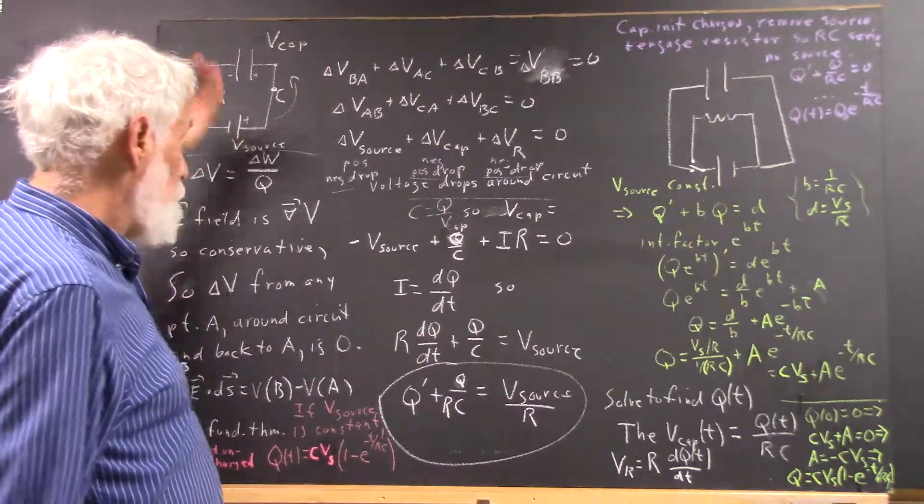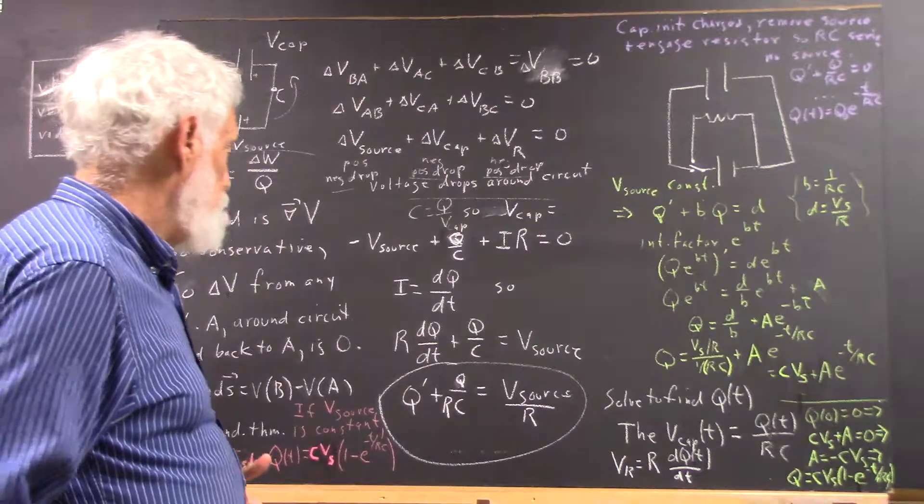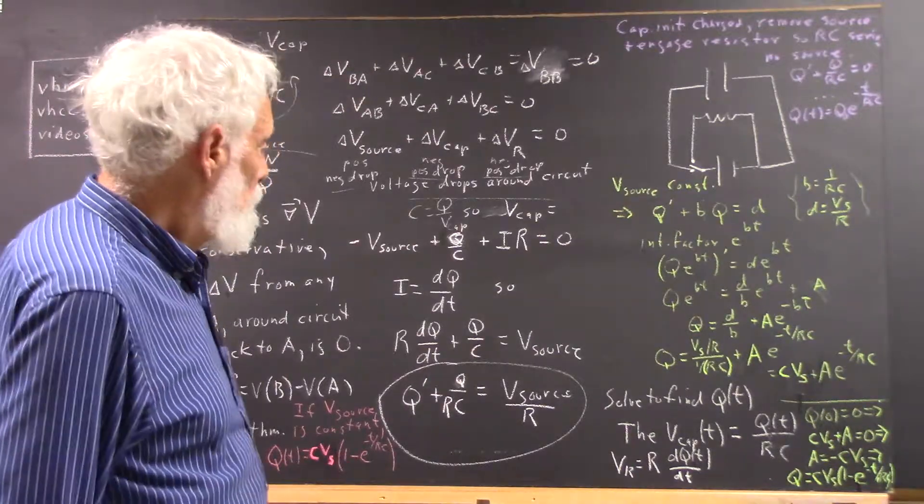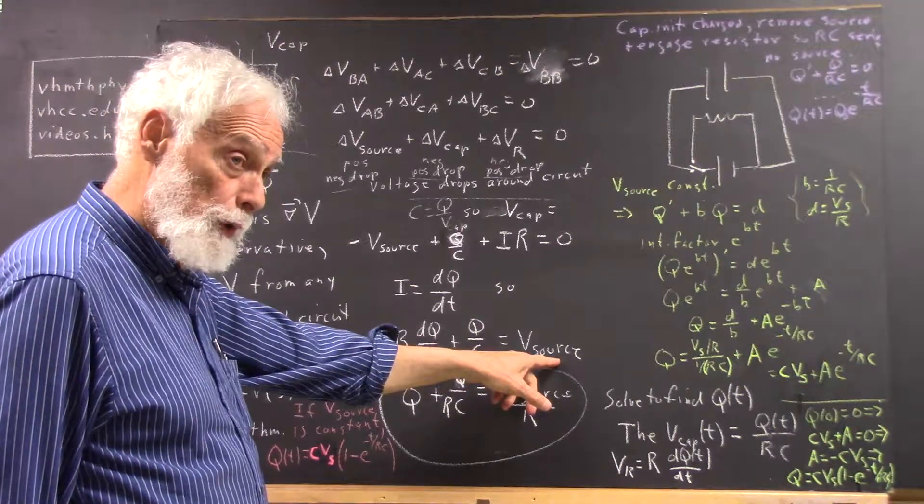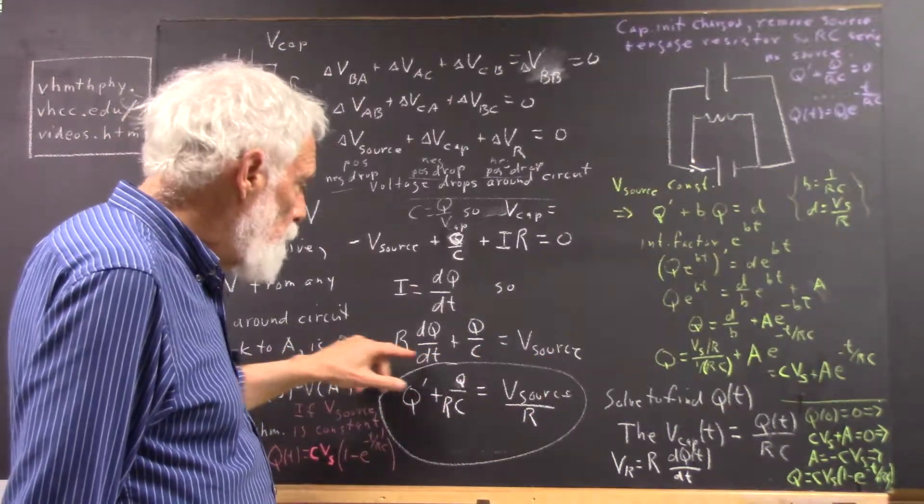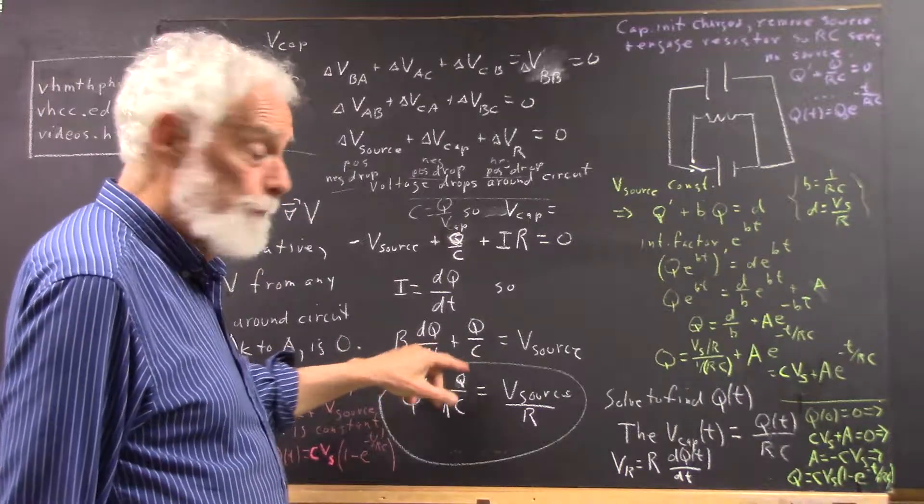Why we talk about voltage drops is simply because when we get down to this equation, we have the source voltage here on one side of the equation and the voltage drops on the other side.